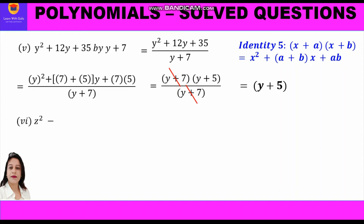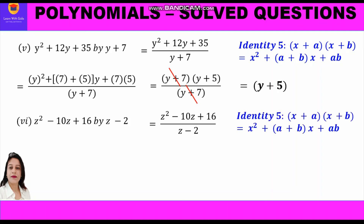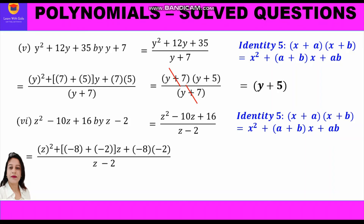Sixth part: divide z squared minus 10z plus 16 by z minus 2. We write in fraction form: (z² − 10z + 16) upon (z − 2). We factorize the numerator using identity 5. We need two numbers whose sum is minus 10 and product is 16. We know that minus 8 plus minus 2 gives minus 10, and minus 8 times minus 2 is plus 16. So a equals minus 8 and b equals minus 2, and in place of x we substitute z.